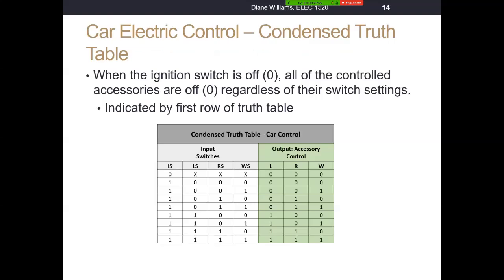Let's fill out the truth table. This is a condensed truth table because when the ignition switch is off — a zero — all of the controlled accessories are off. Our inputs are ignition switch, light switch, radio switch, and window switch. The ignition switch is our enable. Whenever it's a zero, everything will be turned off: lights off, radio off, windows off — we said off was zeros. So we don't care what's on these other inputs, and we've condensed the truth table. All of these outputs are disabled with a fixed output of zero.